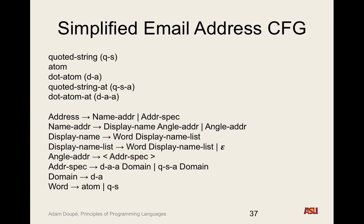A word is either an atom or a quoted string. In that last example, the display-name was two words — one was an atom, one was a quoted string — followed by an angle-address with a left bracket, an address specification, and a right bracket. I got rid of all the whitespace handling; their original grammar also had special cases for Unicode characters.